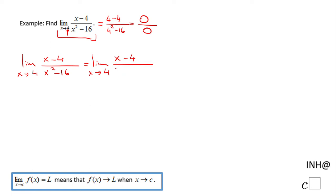x² - 16 is (x - 4)(x + 4) using the difference of squares. And you notice x - 4 cancels out and we end up here with limit when x approaches 4 of 1 / (x + 4).